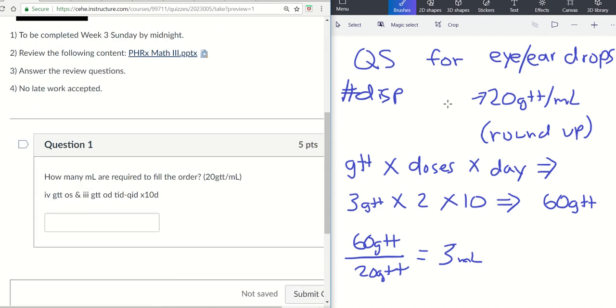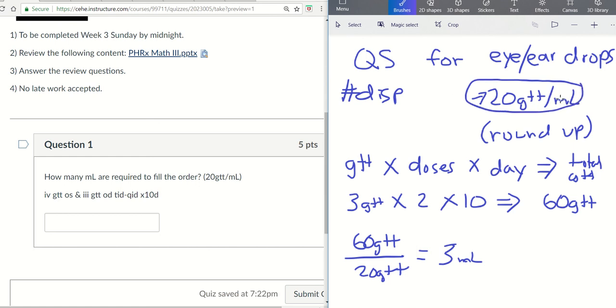So to recap, it's just an extra step. Once we figure out the total number of drops, all we have to do is divide by the conversion factor. 20 drops per ml.